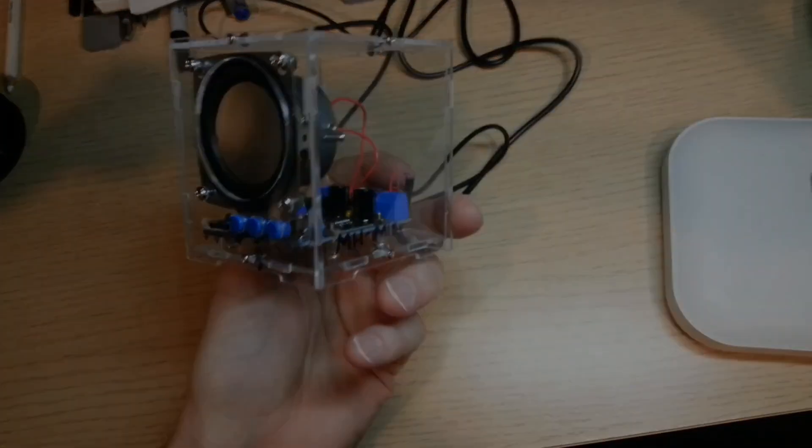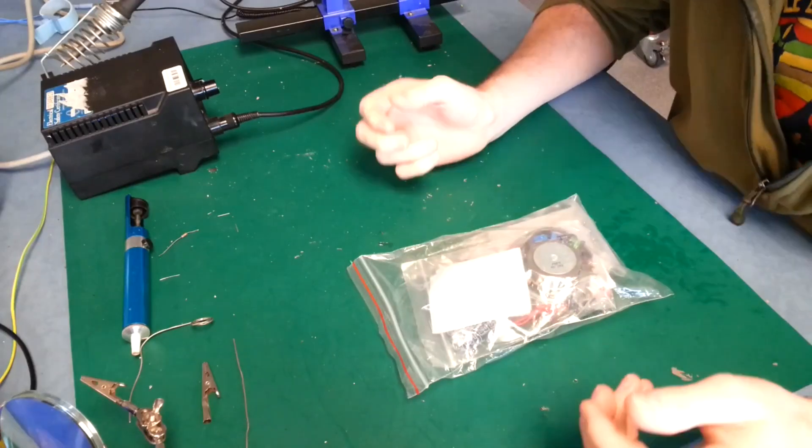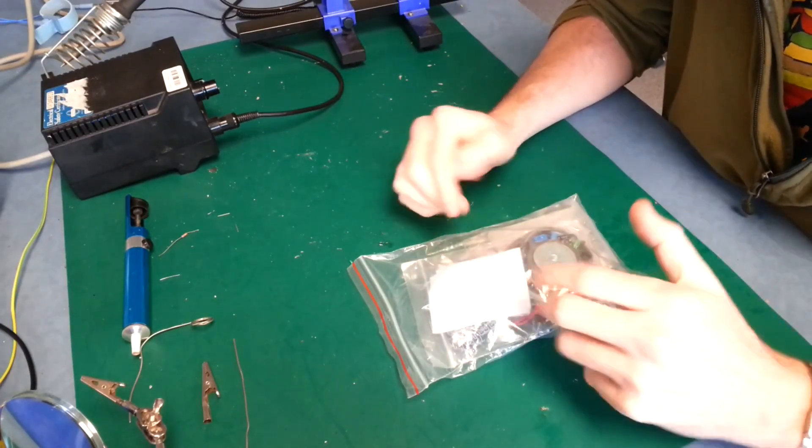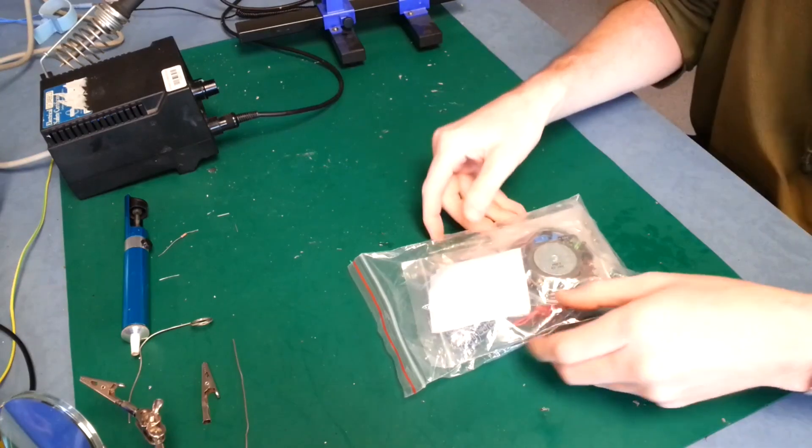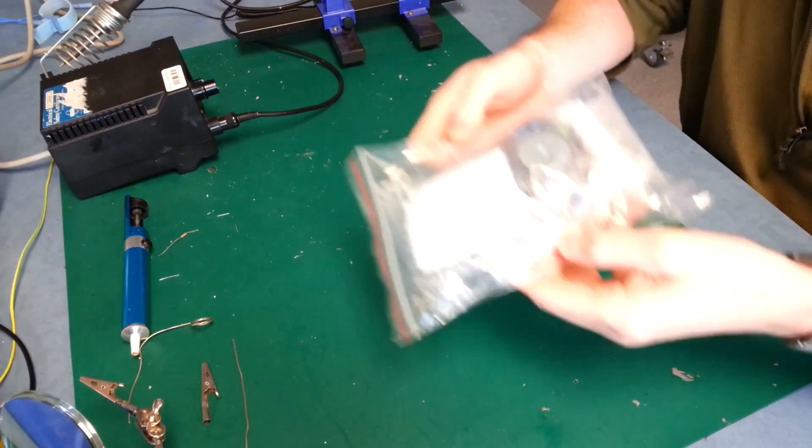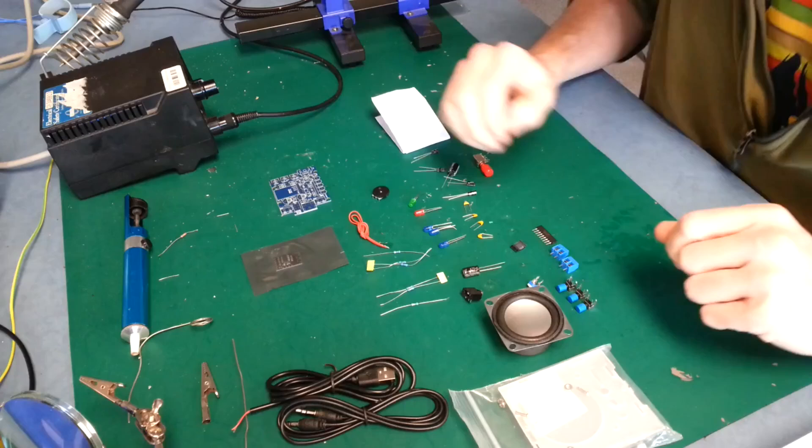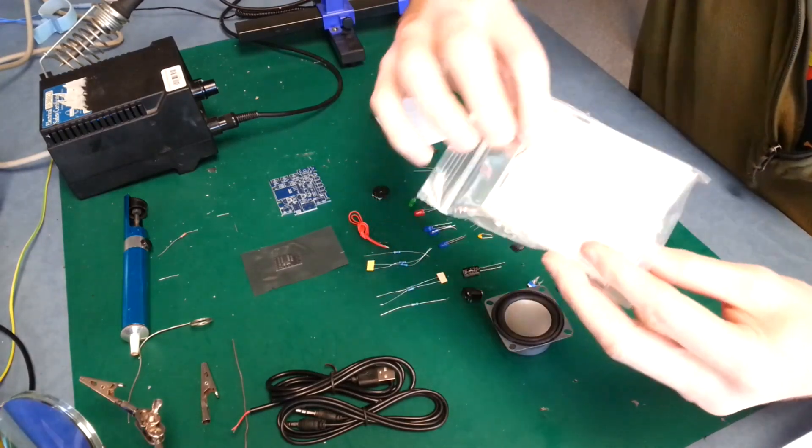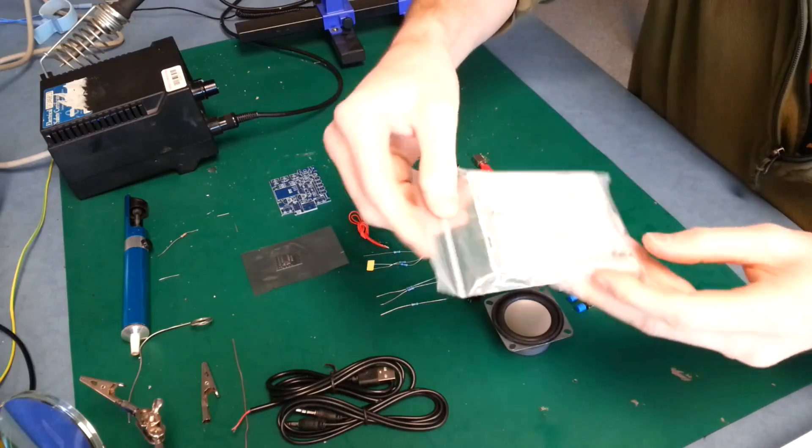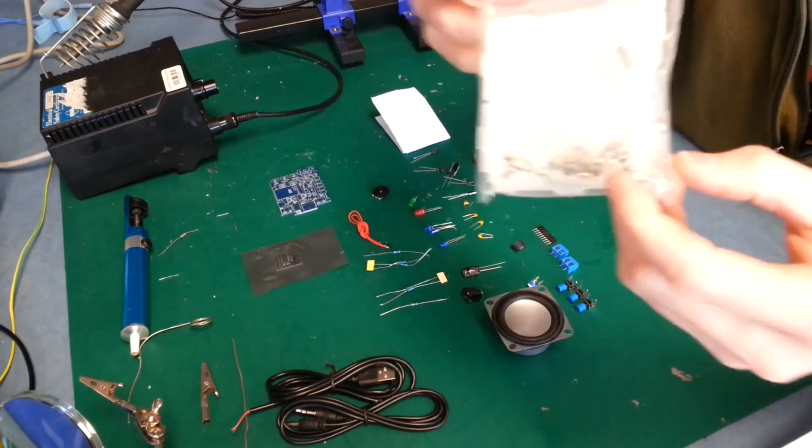This is the bag the speaker comes in. We'll get it open and then we'll see the bits and pieces and go from there. So there's the enclosure, a whole bunch of acrylic. I'm just going to keep that all in one bag because there's a bunch of screws and spacers and stuff.